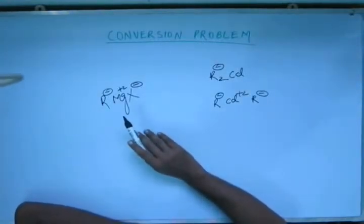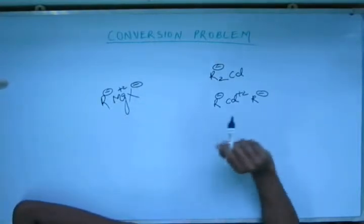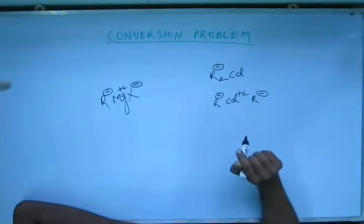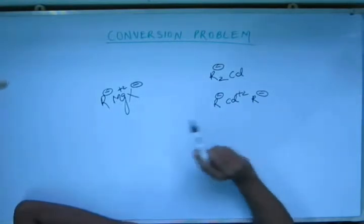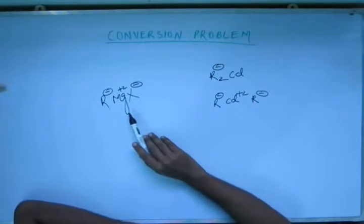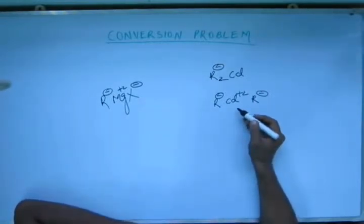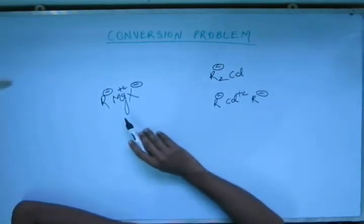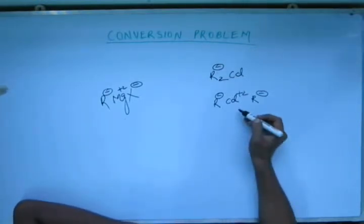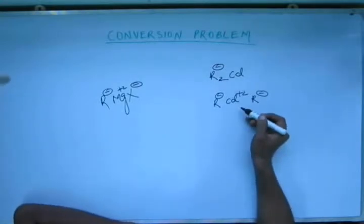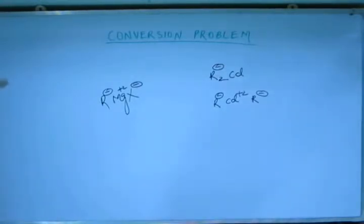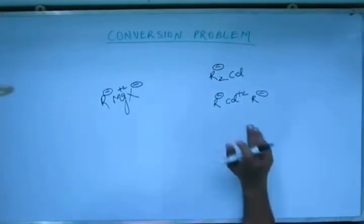The key difference lies in the metal. Magnesium is an s-block metal belonging to the 3rd period, while cadmium is a d-block metal belonging to the 5th period. In magnesium, we don't have d orbitals, but in cadmium we do. In magnesium, the shielding effect is more pronounced, while in cadmium the shielding effect is less.